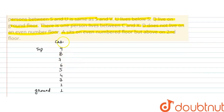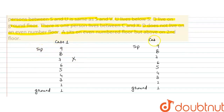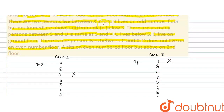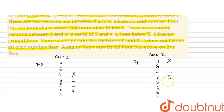यह Case 1 है — X की position को 7 पे रख रहे हैं। Second case draw करते हैं, Case 2 है — X की position को 9th floor पे रखते हैं। Next condition देखते हैं: X और S के बीच में दो persons हैं। Case 2 में ऊपर possible नहीं है, नीचे में देखते हैं — 1, 2 — यहाँ पर S की position होगी। Case 1 में भी नीचे रखते हैं — 1, 2 — यहाँ पर S की position होगी।